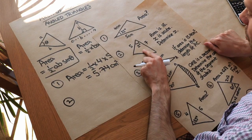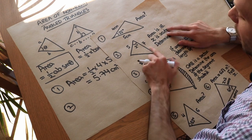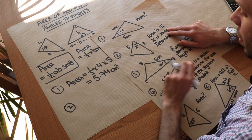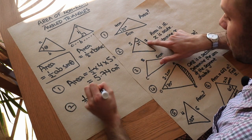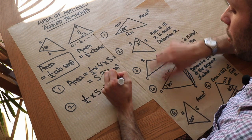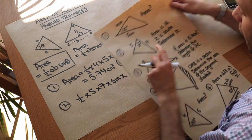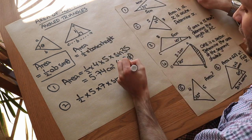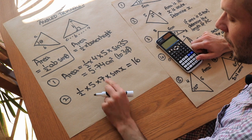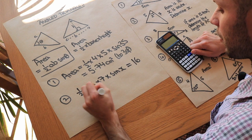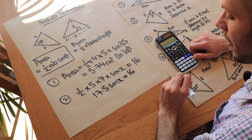For the second question, we're given the area of the triangle as 16 and we want to find the angle. We use the formula: half times one length times the other times sine of x equals 16. Simplifying, half times five times seven is 17.5, so 17.5 sin x equals 16.